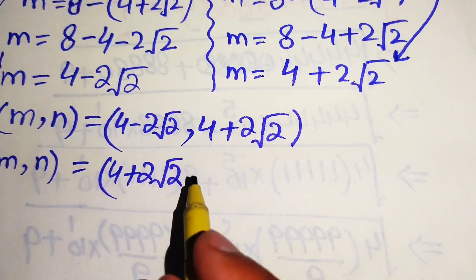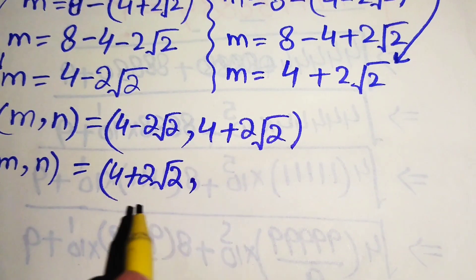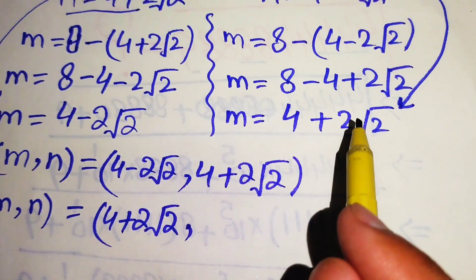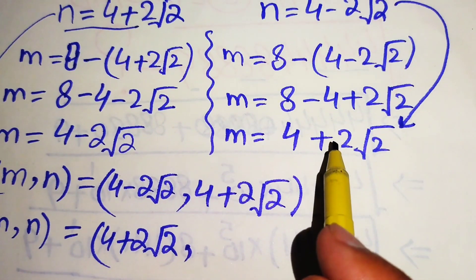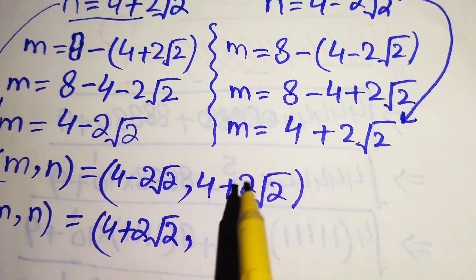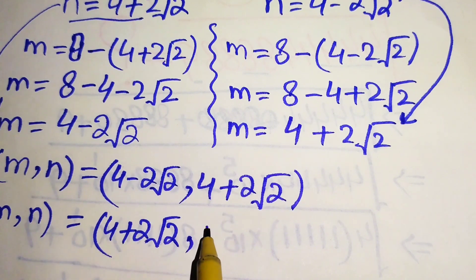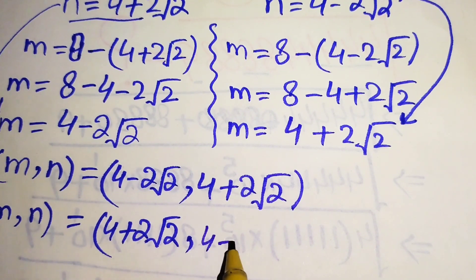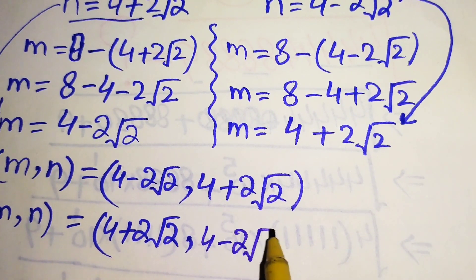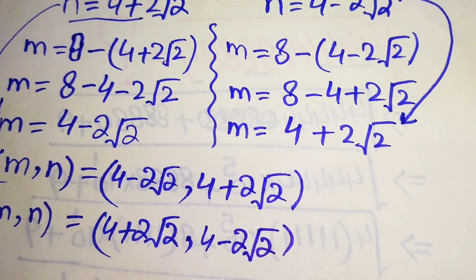In case number two, the value of n is 4 minus 2 root 2.